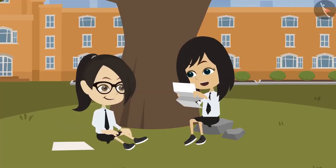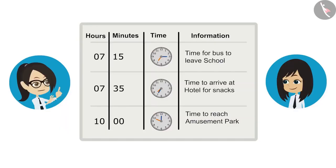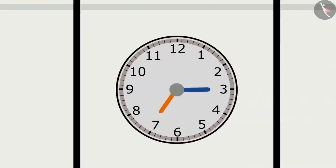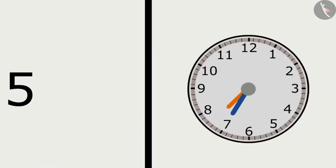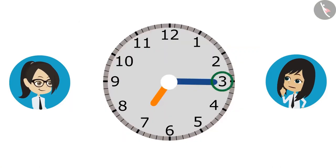First we have to see how much time our bus will take to reach from the school to the hotel. When the time is 15 minutes past 7 o'clock, the minute hand is at 3. When it is 35 minutes past 7 o'clock, the minute hand is at 7. We only have to find the difference between minutes. The difference from one number to another number is 5 minutes.